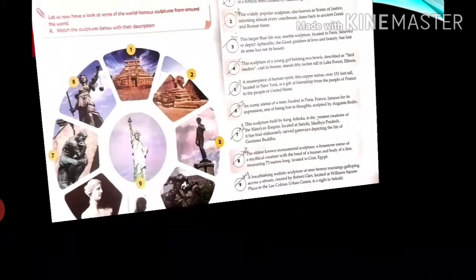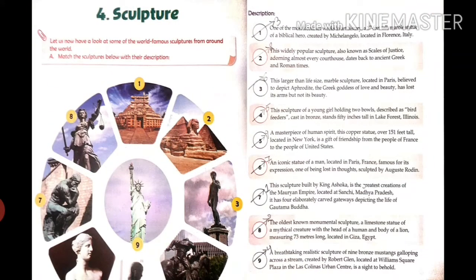Match the sculptures or pictures below with their descriptions. First one: one of the most iconic artworks in art history, a 17-feet tall marble statue of a biblical hero created by Michelangelo, located in Florence, Italy. This description is related to the third picture.